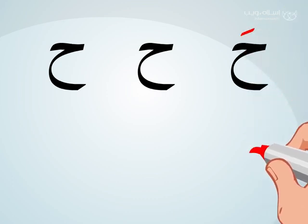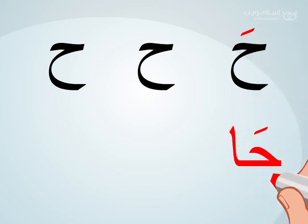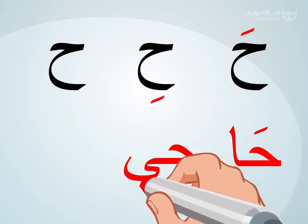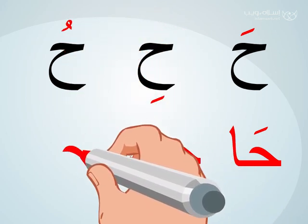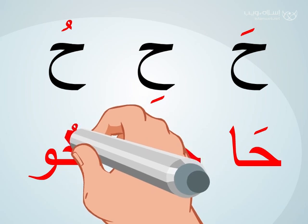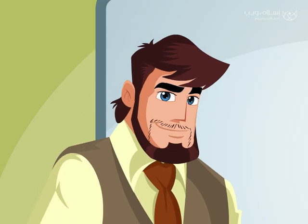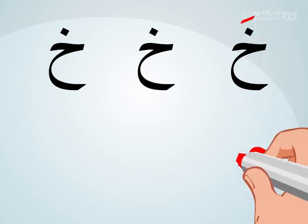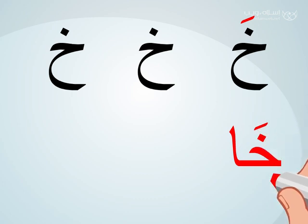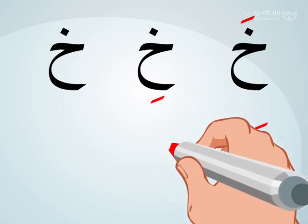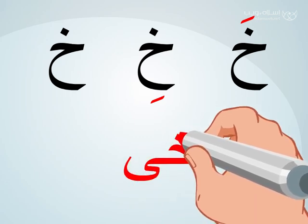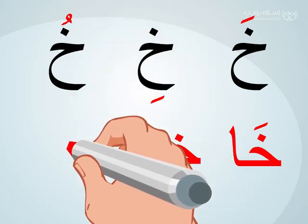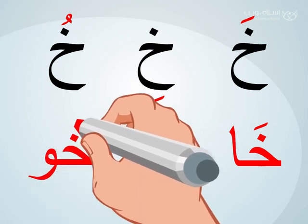The following letter: we write the Ha with Fatah and pronounce 'ha', then we add Mad Alif and pronounce 'haa'. We write the Ha with Kasra and pronounce 'hi', then we add Mad Ya and pronounce 'hii'. We write the Ha with Dham and pronounce 'hu', then we add Mad Waw and pronounce 'huu'.